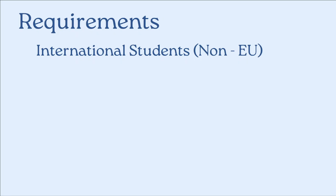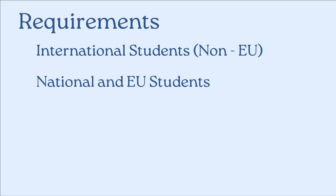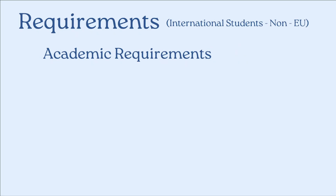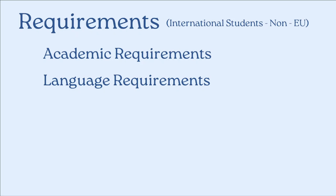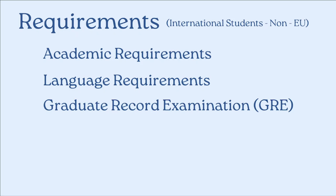Now let's have a look at the requirements. There are two different types of requirements: a separate set for international students, meaning non-EU students, and another set for national and EU students. In this video, my focus will be on international, non-EU students. The requirements are divided into academic requirements, language requirements, and GRE requirements, because GRE is also required for international students.